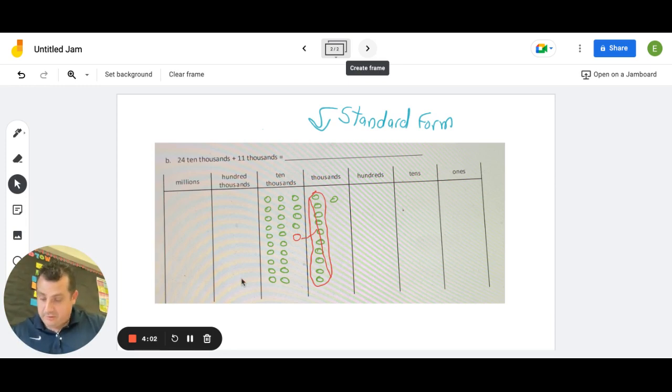Now I move into my 10,000s column. Let's see what bundling I can do here. 1, 2, 3, 4, 5, 6, 7, 8, 9, 10. There's one bundle. I can exchange that for 100,000. Here's another bundle. Exchange that for another 100,000. And then I don't have enough to do any more bundling. So I'm left with 5 10,000s.